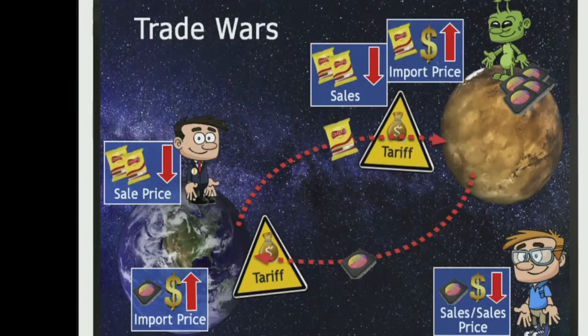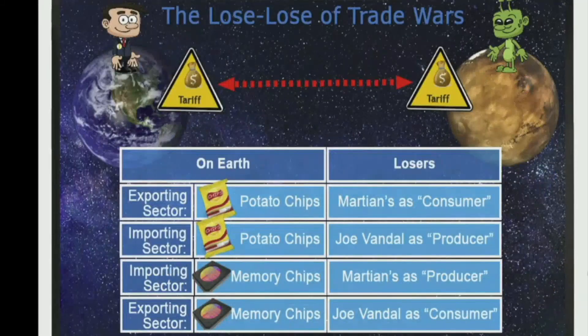Joe worries about upsetting the Martians by imposing a tariff. The Martians could put a tariff on Joe's potato chips in retaliation. If the Martians put a tariff on potato chip imports, then some potato chips that normally would ship to Mars will stay in the local market, and the surplus in supply may drive down the price of Joe's potato chips. Based on the possible gains from free trade, economists would say that at the country level, unlike the win-win payoff under free trade, a trade war will lead to a lose-lose for both countries.